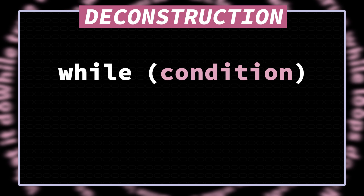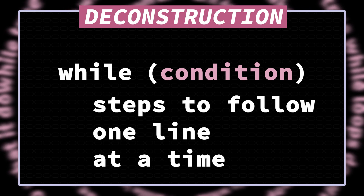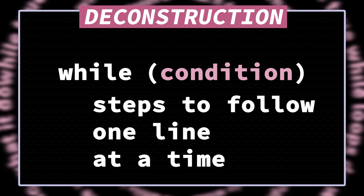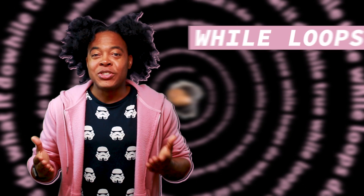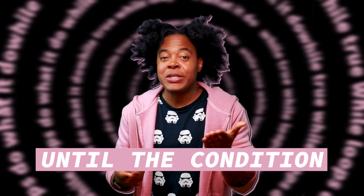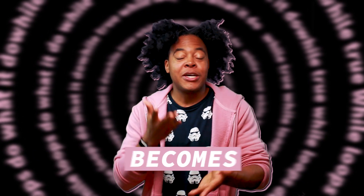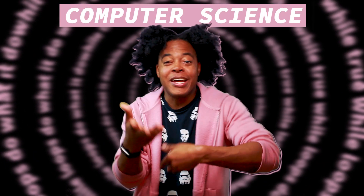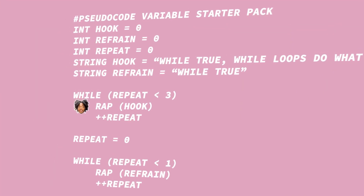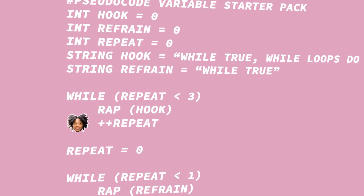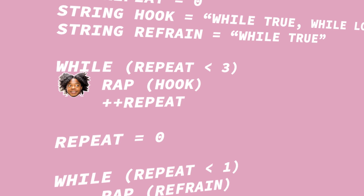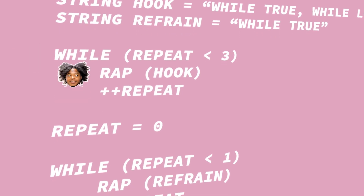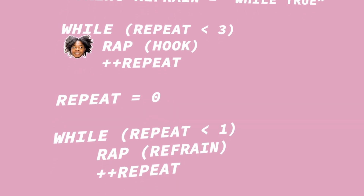While loops start with a condition and the body of code for repetition. While loops do your composition until the condition becomes false. While true — while loops do what it do.